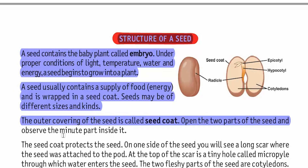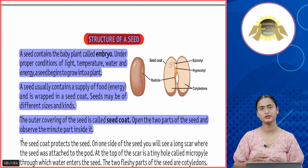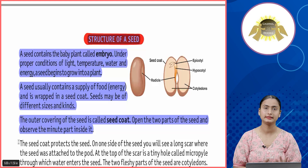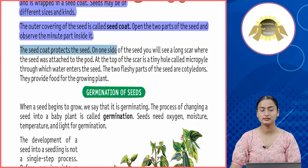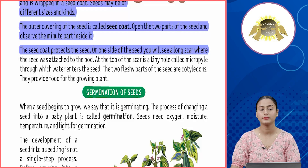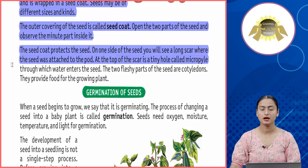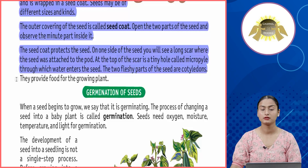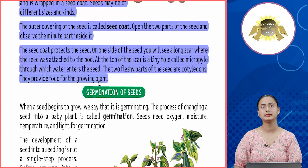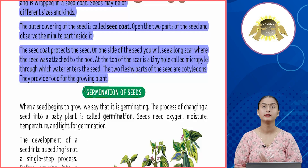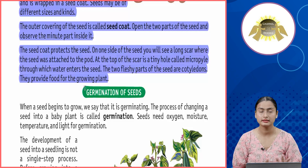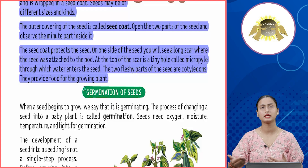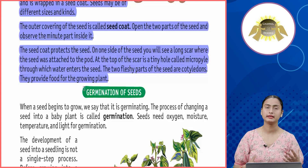The outer covering of the seed is called the seed coat. If you open the two parts of a seed, you can observe tiny parts inside. On one side of the seed is a long scar where the seed was attached to the pod. At the top of the scar is a tiny hole called the micropyle, through which water enters the seed. The two fleshy parts of the seed are called cotyledons, which provide food for the growing plant.